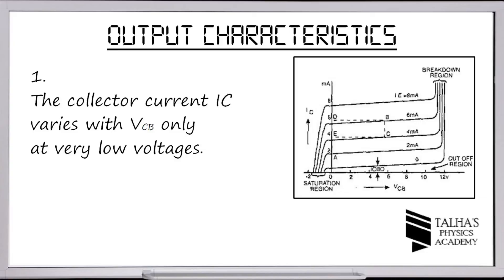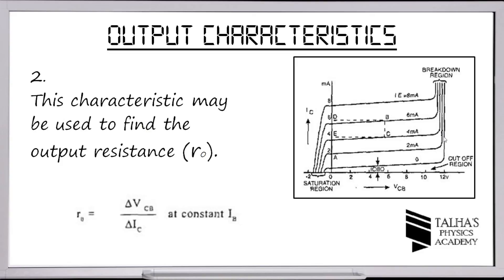Point 1: the collector current IC varies with VCB only at very low voltages; at higher voltages it becomes nearly constant. Point 2: the output characteristic can be used to find the output resistance RO, which is the change in collector-base voltage divided by the change in collector current at constant emitter current, measured between two points or curves.